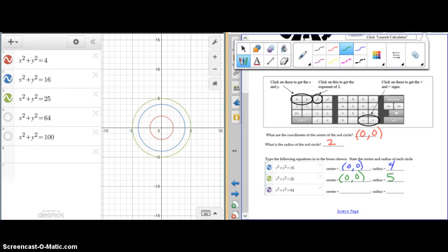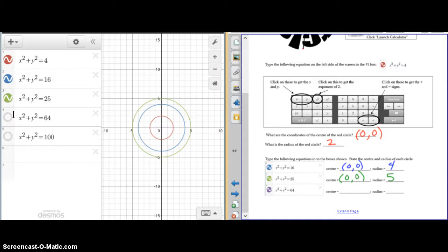The last circle was the purple one. x squared plus y squared equals 64. And looking at the scale, the center was at 0, 0, and the radius is 8.